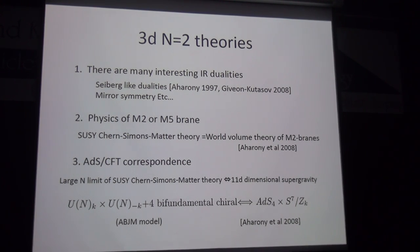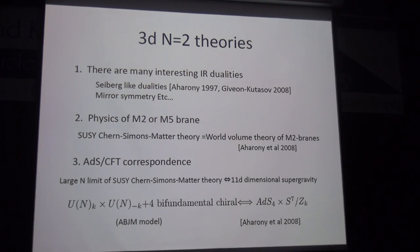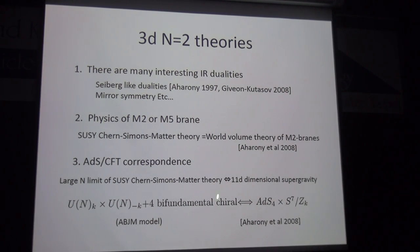The third motivation is AdS/CFT correspondence. An appropriate large-N limit of a particular class of supersymmetric Chern-Simons theory is dual to eleven-dimensional supergravity. The most famous example is the ABJ model, where the gauge group is U(N) × U(N) with Chern-Simons levels K and −K, coupled to bifundamental matter, dual to eleven-dimensional supergravity on AdS₄ × S⁷/Z_K.